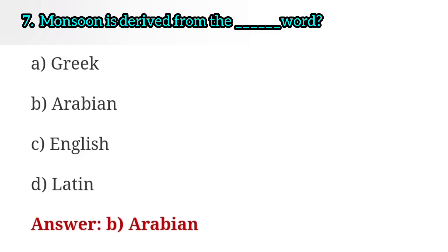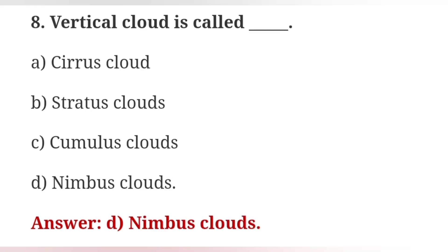Question 7: Monsoon is derived from which word? Answer: Option B — Arabian. Question 8: Vertical cloud is called what? Answer: Option D — Nimbus Clouds.